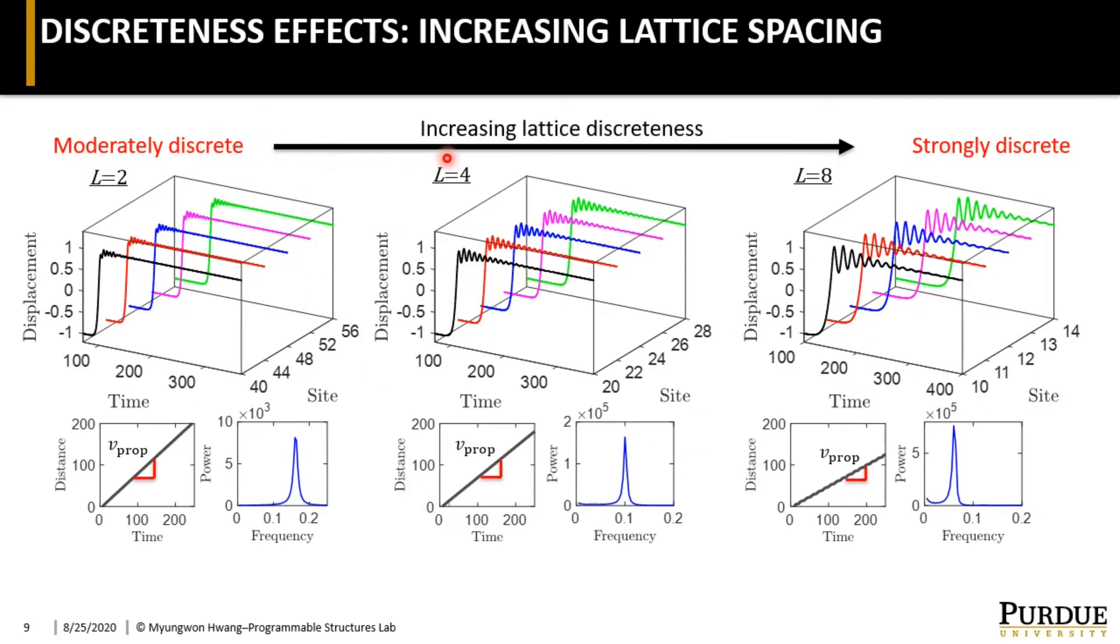As we increase the lattice spacing or equivalently the lattice discreteness, we can clearly see that there is an amplification of the tail motion. These subplots show the contour of the transition wave, where the slope indicates the propagation speed, and here we have plotted the frequency of the tail part. And it shows that this amplification of the tail motion comes at the price of the reduced propagation speed and the reduced tail frequency. In other words, more energy of the transition wave has been proportioned to boost the tail motion at the expense of transportability.